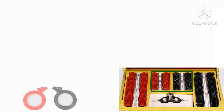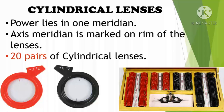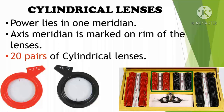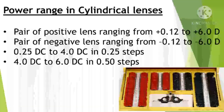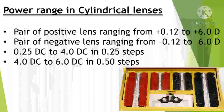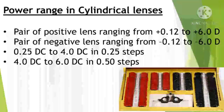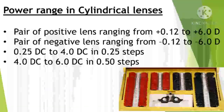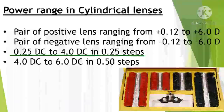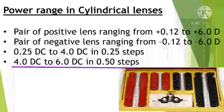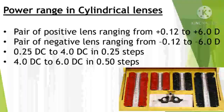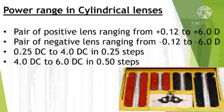Cylindrical lenses have power in only one meridian; unlike spherical lenses, the power is not the same in each meridian. On every cylindrical lens, the axis is marked. There are a total of 20 pairs of positive and 20 pairs of negative cylindrical lenses in the trial box. The power range of cylindrical lenses is 0.12 D to 6 D. From 0.25 D to 4 D the steps are 0.25 D apart, and from 4 D to 6 D the steps are 0.50 D apart. Cylindrical lenses are used for astigmatic correction.